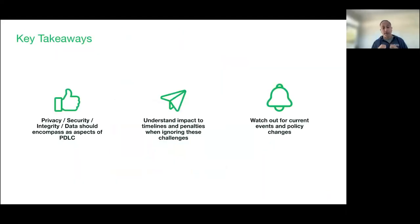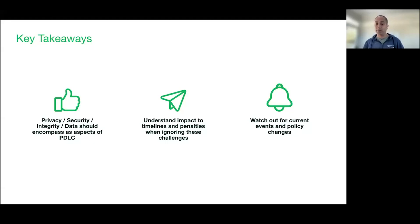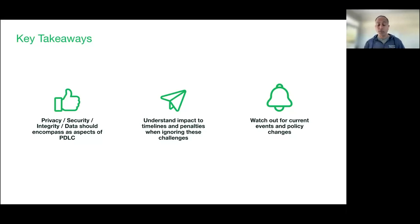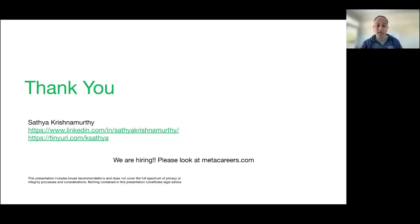Key takeaways: Privacy, security, integrity, and data should encompass all aspects of the product development lifecycle, whether you are building consumer-facing products or API-based features. Understand the impact of timelines and penalties when ignoring these challenges, because any estimation you make will be meaningless without taking into consideration these critical items that could impact timelines, cause rollbacks, or result in penalties. Watch out for current events and policy changes — if you are thinking about a global product or feature, they could come back to impact your timelines. Thank you. Are there any questions?